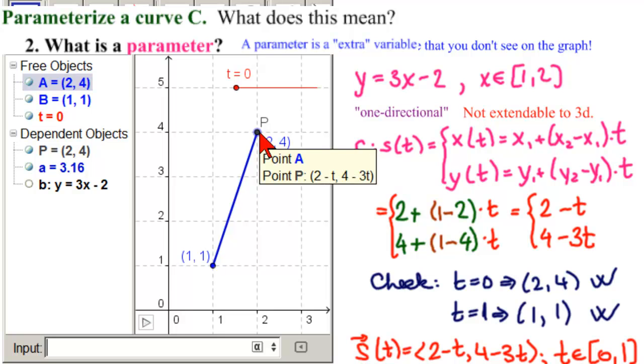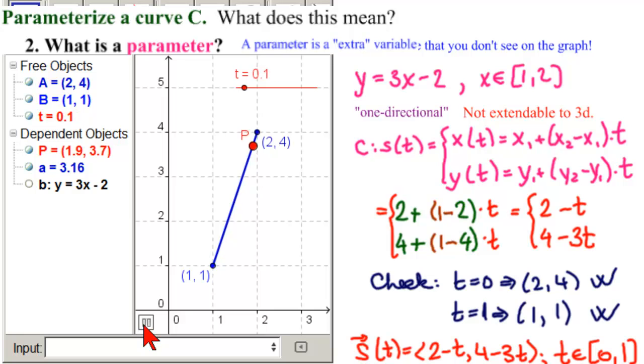Here's P. And now let's see that as T goes from zero to one, P goes from two, four to one, one. And we see that it does do this. So that makes our parameterization correct.